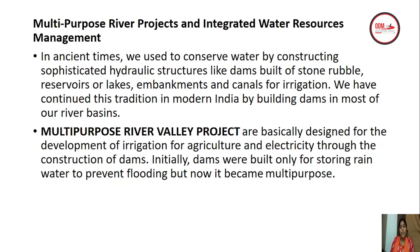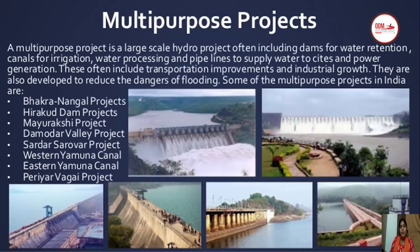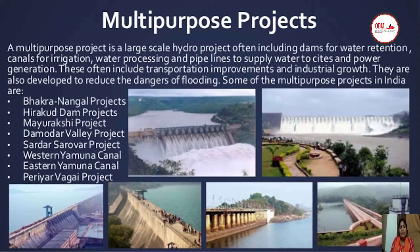Initially, dams were built only for storing rainwater to prevent flooding, but now they have become multi-purpose. The stored water can be used through canals for irrigation, processed and supplied via pipelines to cities, and also used to generate power. These projects often include transportation improvements and industrial growth, and are also developed to reduce the dangers of flooding.